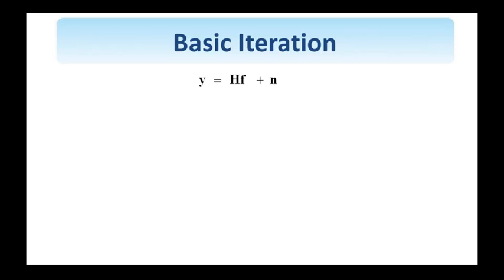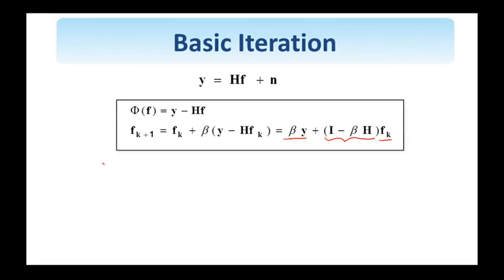For the image restoration problem we are working with here is the degradation equation we've been using all along. So the simplest possible way to try to find an f here is to form a φ of f that equals y minus Hf. So we're going to find the root we want to find an f so that Hf is equal to y. The successive approximations iteration takes the form shown here. It's a rather straightforward iteration to implement. This is independent of the iteration so is this matrix. So at each iteration I find the restored image f_k multiplied with this matrix add β y and this gives me the result of the next iteration step.